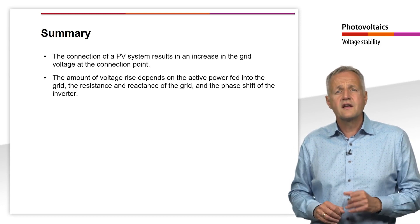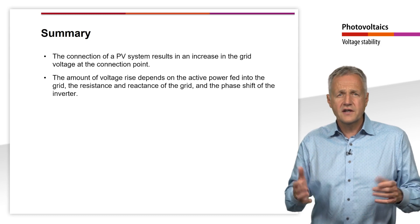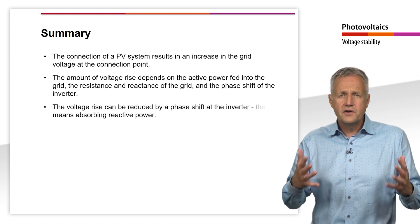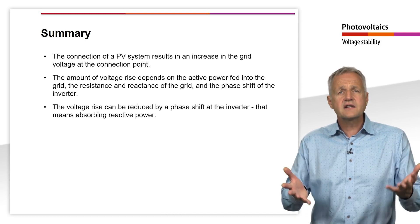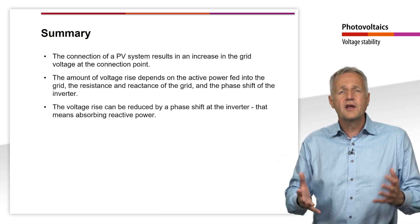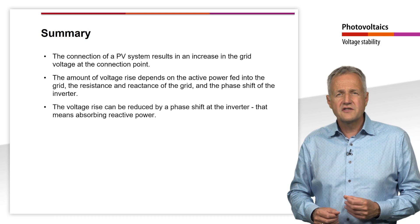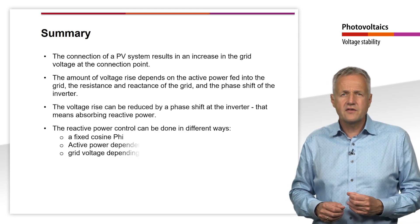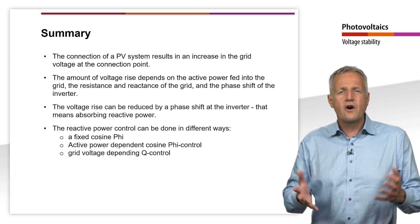The amount of voltage rise depends on the active power fed into the grid, the resistance and reactance of the grid, and the phase shift of the inverter. To reduce the voltage rise, inductive reactive power can be drawn from the grid by a phase shift at the inverter.